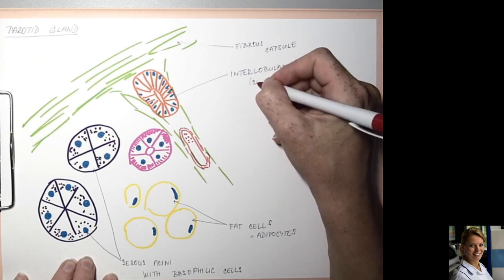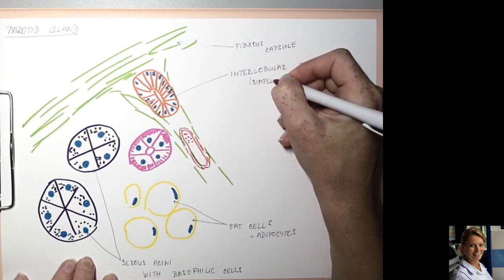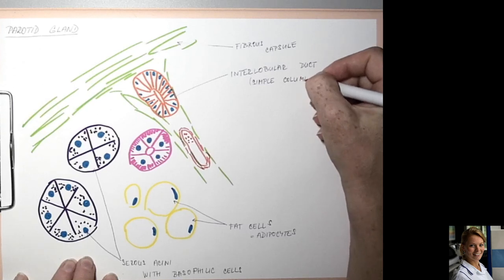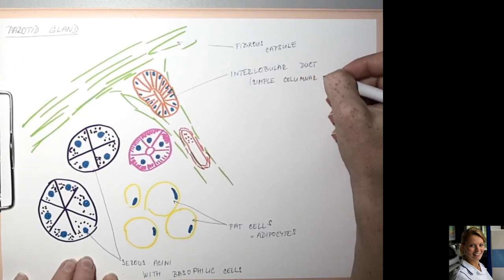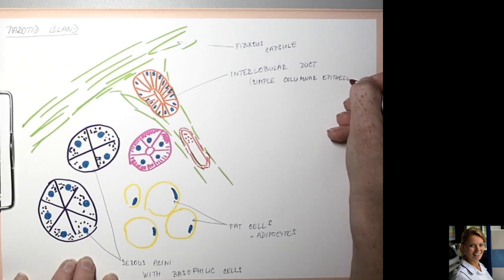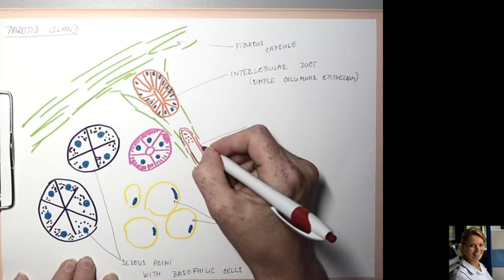With simple columnar epithelium. Here is a blood vessel.